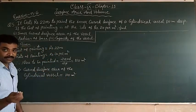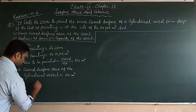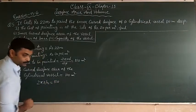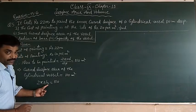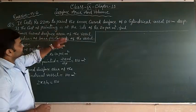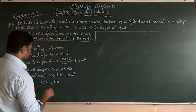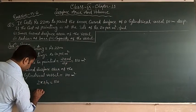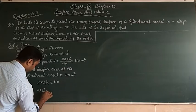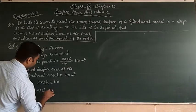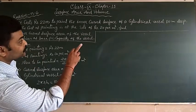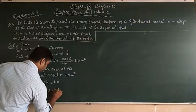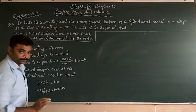Now what is the curved surface area? 2πrh. So 2πrh is equal to 110. H is also given. The depth is given as 10 meters. So 2 into 22 upon 7 into r into 10 is equal to 110.